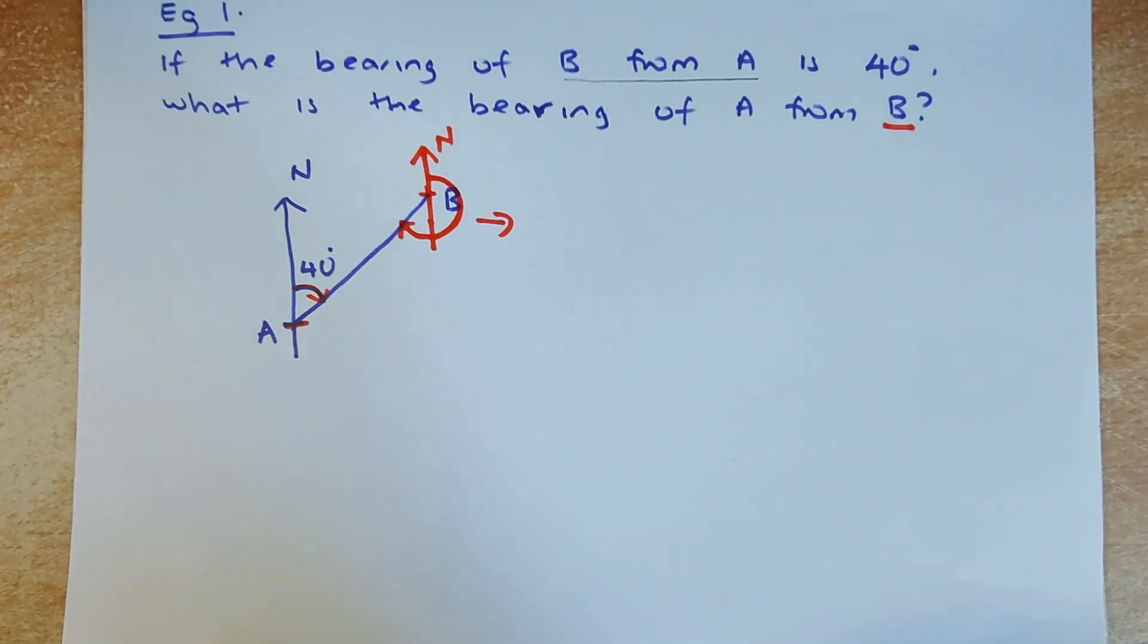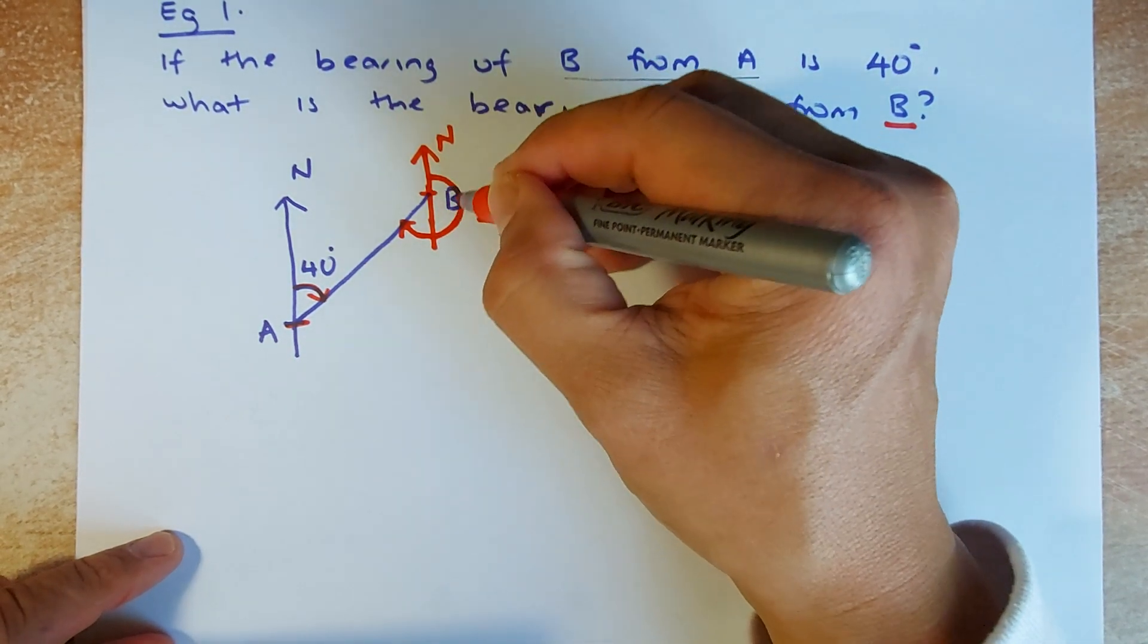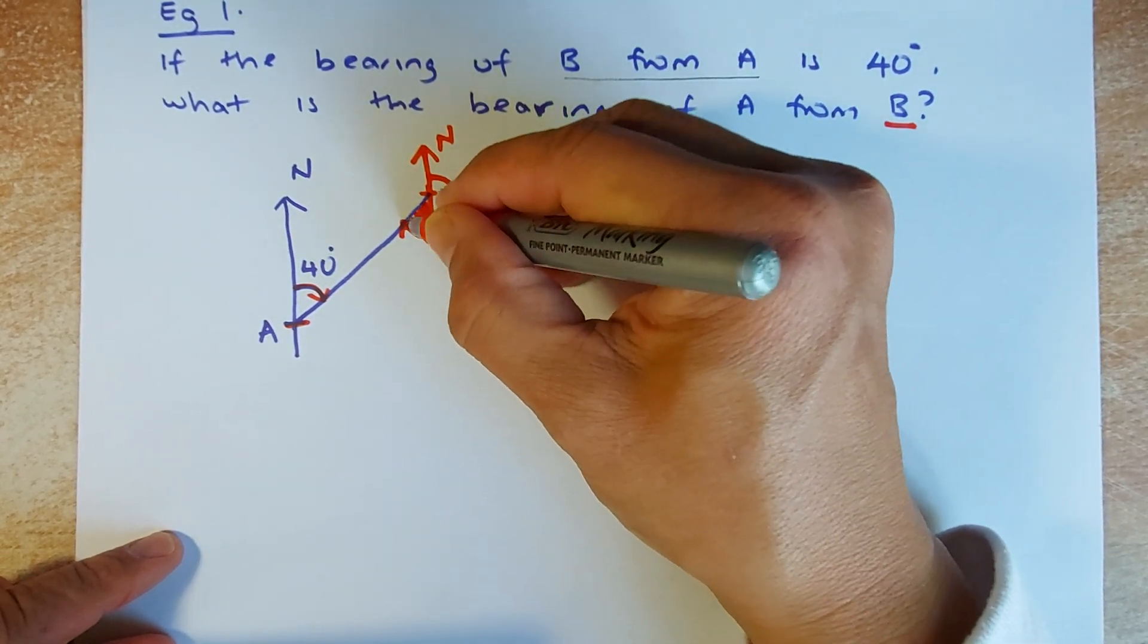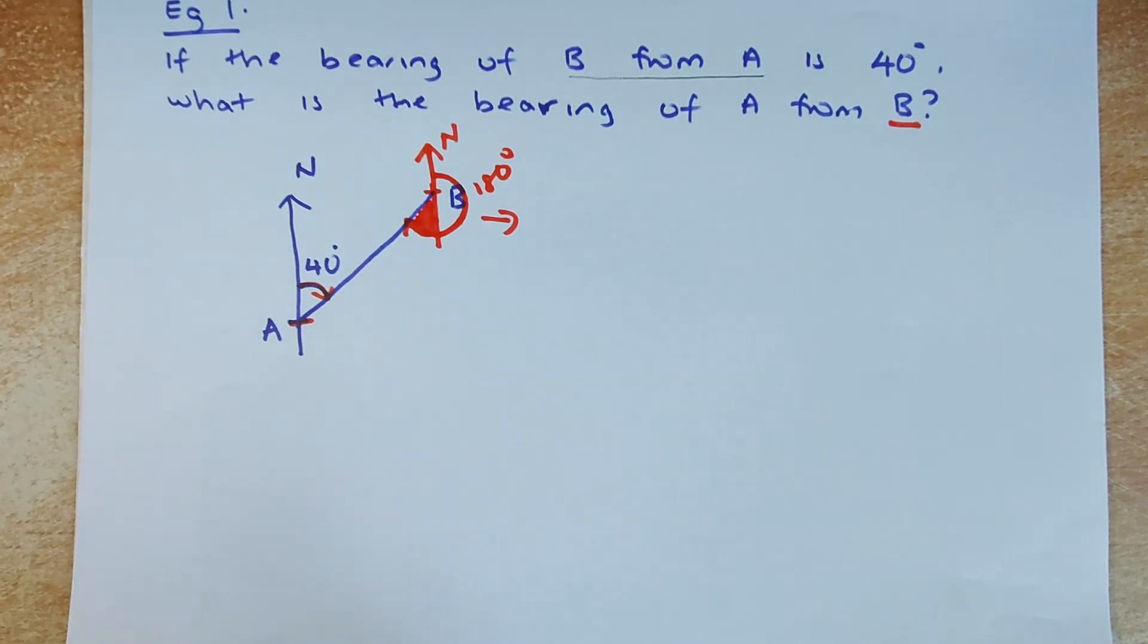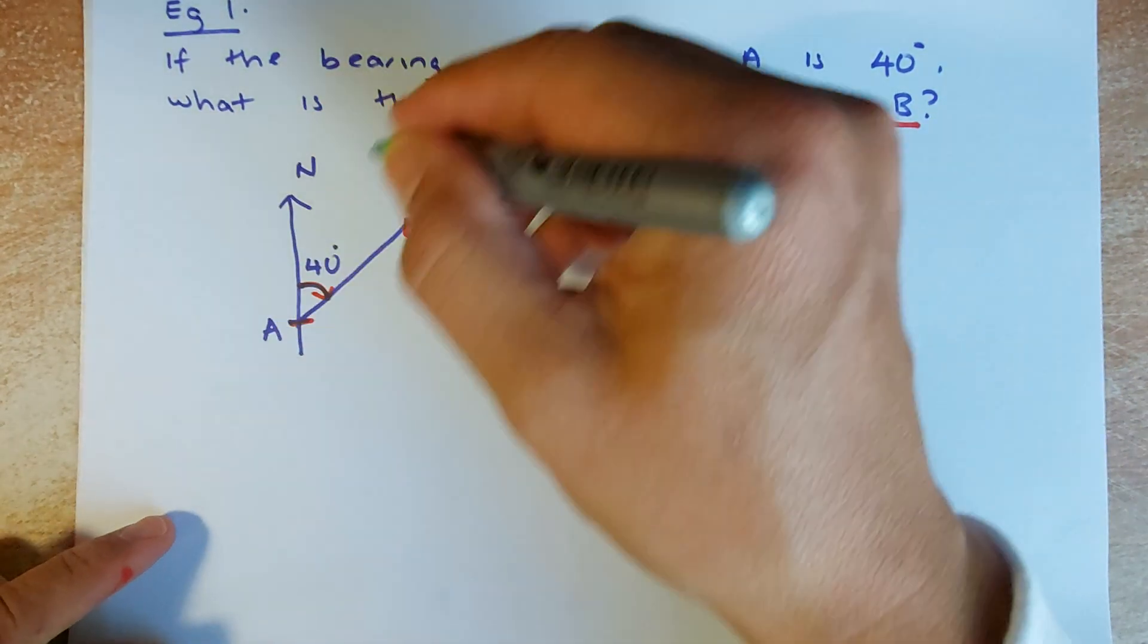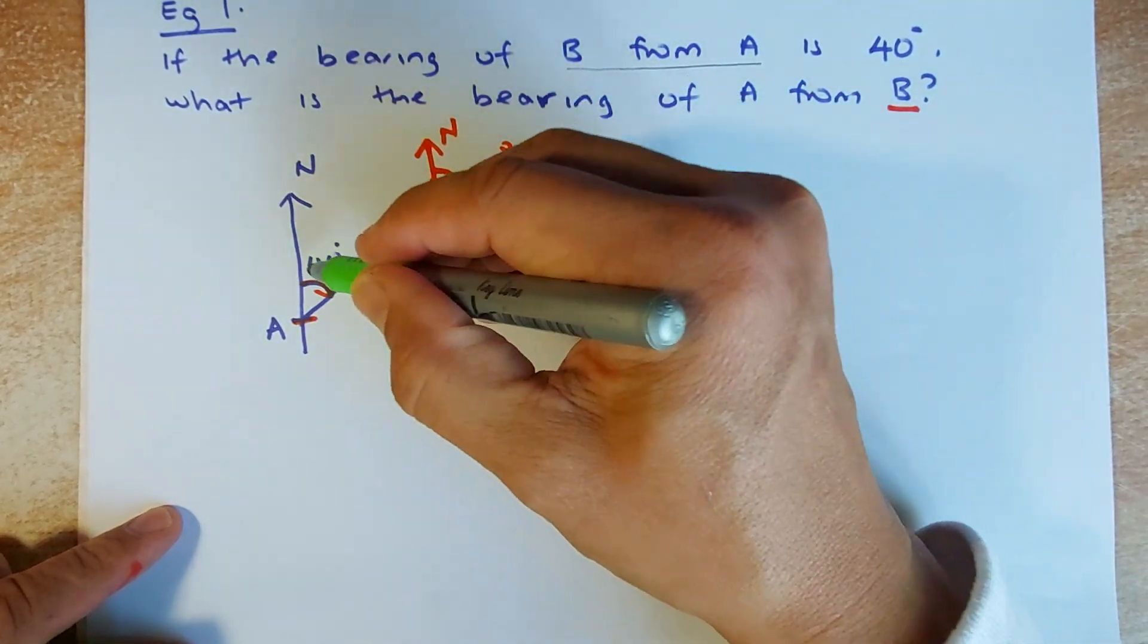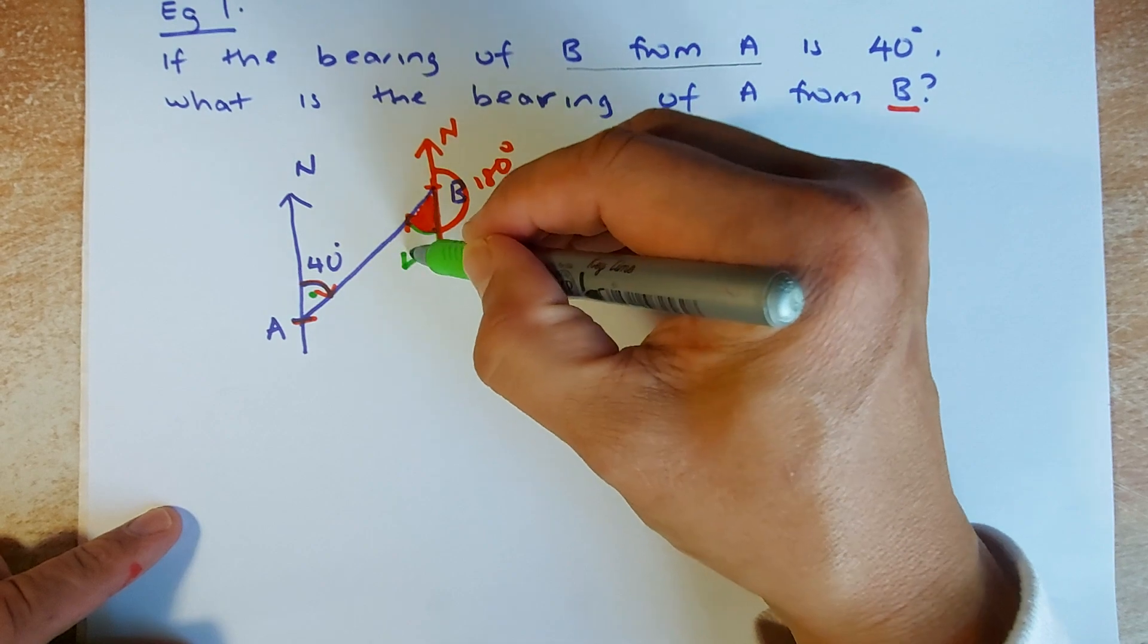We know that this part here is going to be 180 degrees and we need to calculate this angle here. To calculate this angle, we have to use the angles property. If you know that this is two parallel lines, this is an alternate angle. So if this is 40, that is also 40.